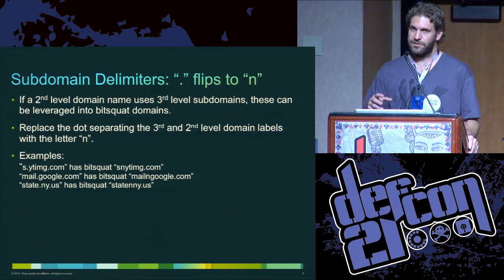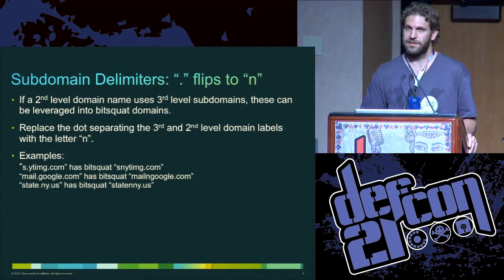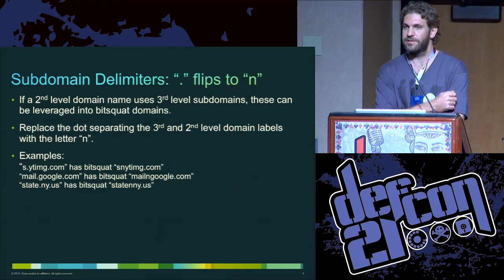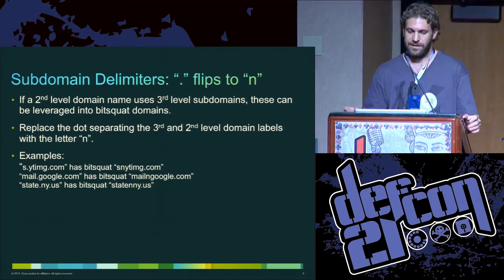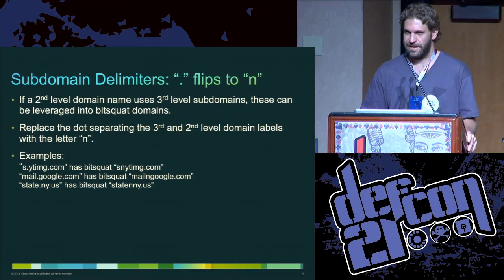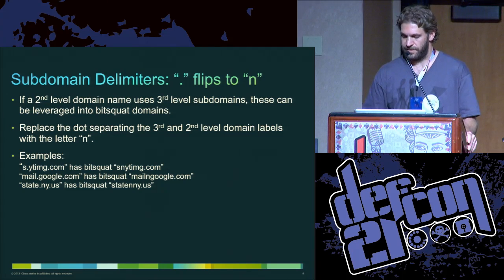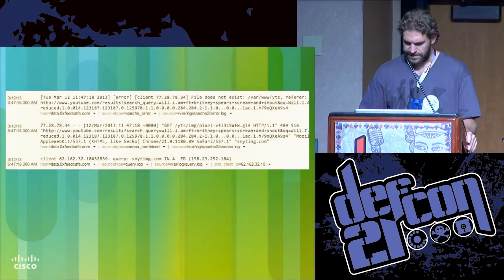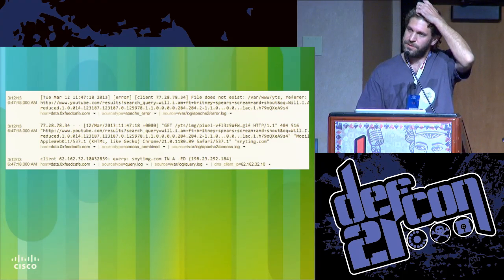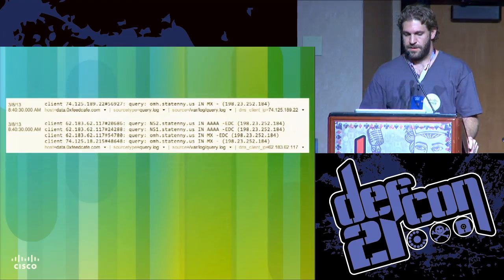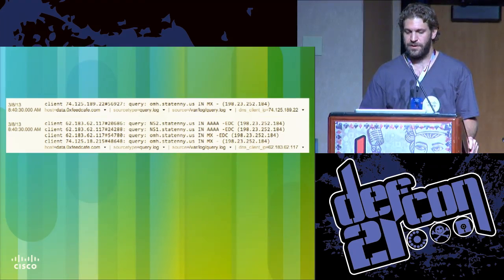Because it's bidirectional, you can also have dots that flip into becoming the letter N. One of the best examples we registered was ytimg.com — they use this content delivery network in a lot of their webpages to serve content. We replaced the dot separating the third-level subdomain from the second level and registered the entire thing: S-N-Y-T-I-M-G.com. Another interesting one was the state of New York — every state has a state.something.us domain. You can replace that second dot from the right with a letter N and see traffic. We got an example from YouTube with an actual referrer going to our snytimg.com domain. The OMH subdomain is a real subdomain at the state of New York — the Office of Mental Health — and we were getting lots of different requests from them.